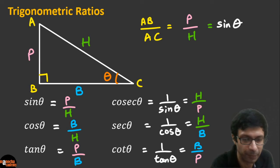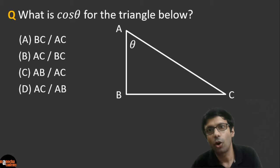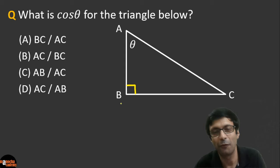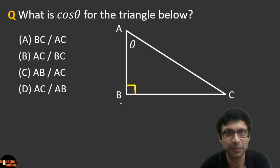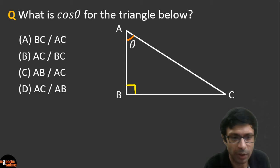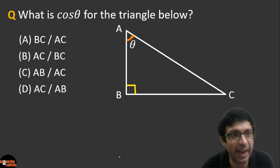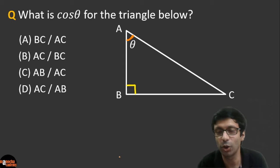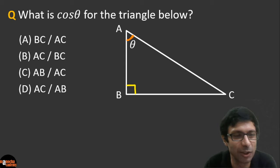Now I have a question for you: what is cos theta for a triangle that is right-angled at B, with the angle theta at the top? I have four options — A, B, C, and D. Take a careful look. What do you think is the right answer?